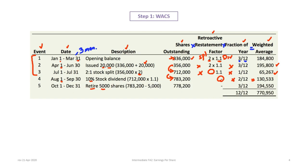On October 1st, the company retires 5,000 shares. Taking 783,200 minus 5,000 gives 778,200 shares, with no retroactive restatement factor. That number of shares is outstanding for 3 out of 12 months — October, November, and December — giving us 194,550. Adding all the weighted averages together, the total weighted average number of common shares is 770,950. The fractional months also sum to 12 out of 12, confirming the calculation.